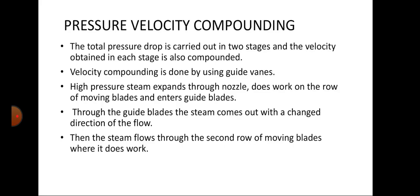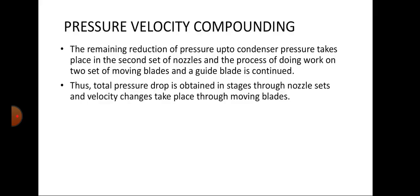Velocity compounding is done by using guide vanes. The remaining reduction of pressure down to the condenser pressure takes place in the second set of nozzles. The process of doing work on two sets of moving blades and a guide blade is continued. Since both pressure and velocity reduce at the end of each stage, this is called pressure-velocity compounding.